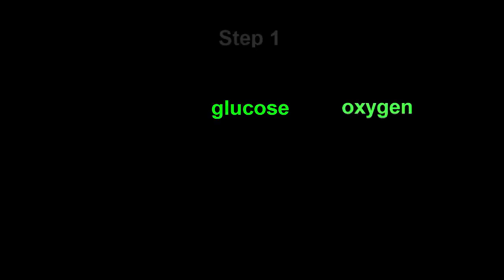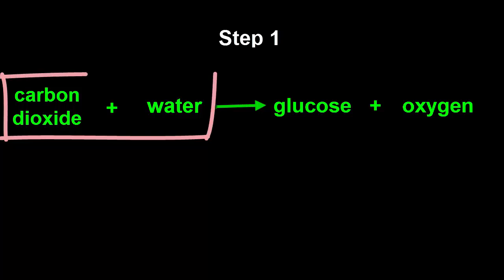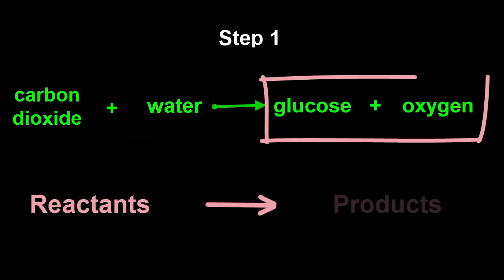Let's do our steps to balance the photosynthesis equation. Step 1: Write the reactant and product names. Remember, the carbon dioxide was breathed in from the air, water was taken from the soil, so they're reactants. Glucose and oxygen were made, so they're products.